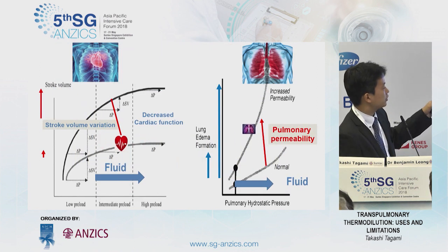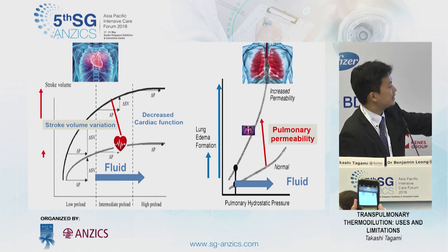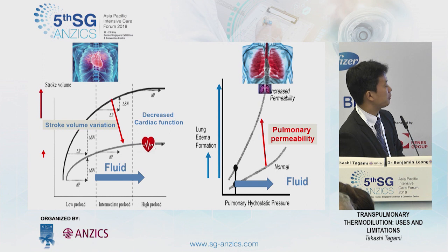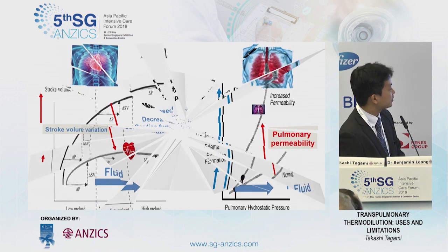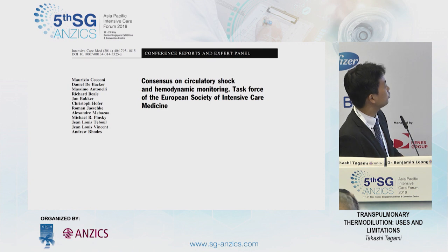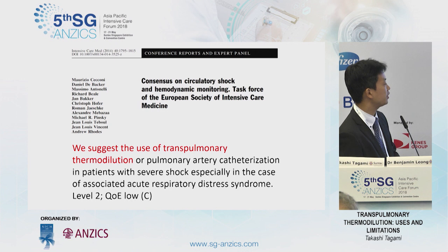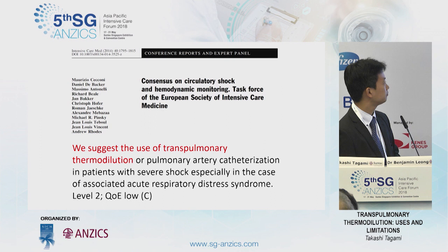If you encounter a patient with decreased cardiac function and increased pulmonary vascular permeability, what shall we do? Let's ask two experts, including Michael Pinsky. This is the consensus conference report on circulatory shock and hemodynamics. They suggest using the transpulmonary thermodilution or PA catheter in patients with severe shock, especially in cases associated with ARDS.